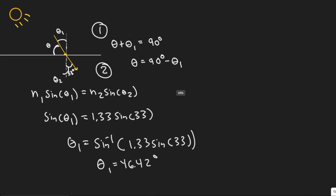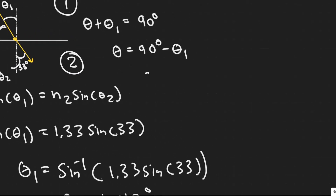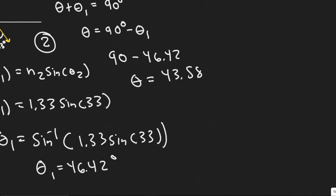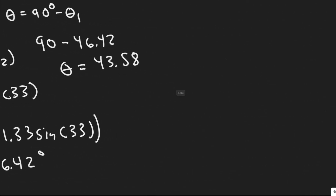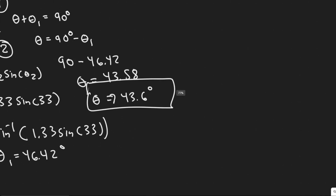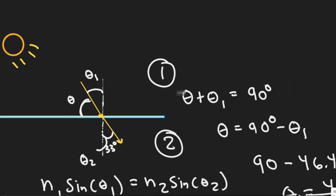Now we have theta 1. We want the angle above the horizon, which is theta. So we do 90 minus 46.42, which gives theta equals 43.58 degrees — rounding to 43.6 degrees. You can round however your teacher prefers. So 43.6 degrees is the angle above the horizon.